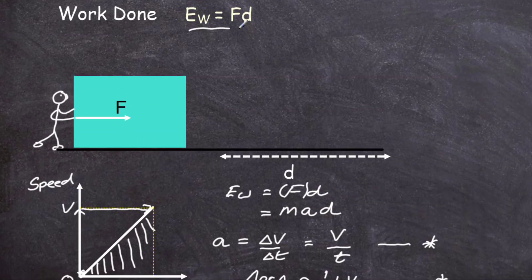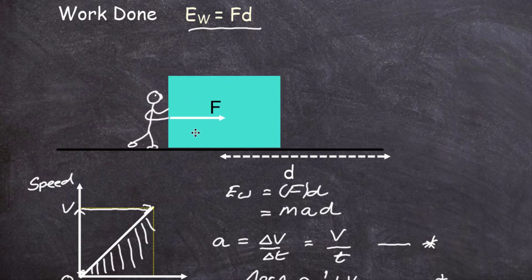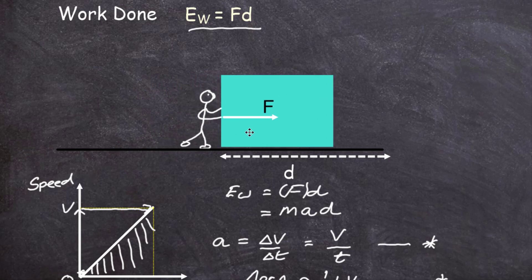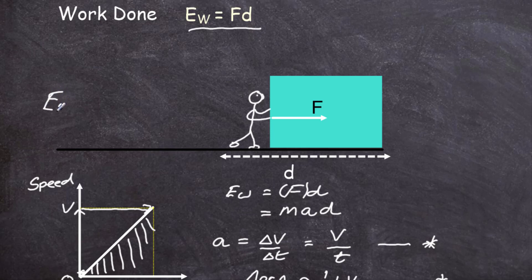The work done is the force times the distance. Where a force pushes an object over a certain distance, energy is transferred into kinetic energy, and we now know the value of that kinetic energy — we can work it out. The kinetic energy is equal to one half the mass of the object times its speed squared.